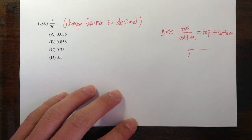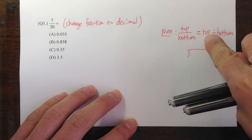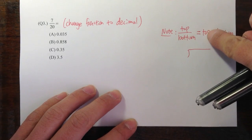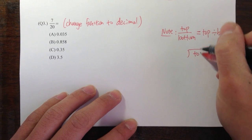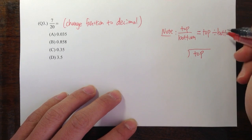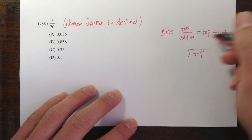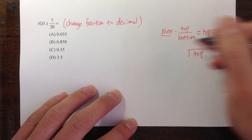To set up the long division, draw the long division symbol and put the first number inside. The first number is always going to be the top number. So put the number on the top inside, and the number on the bottom, the second number, outside.